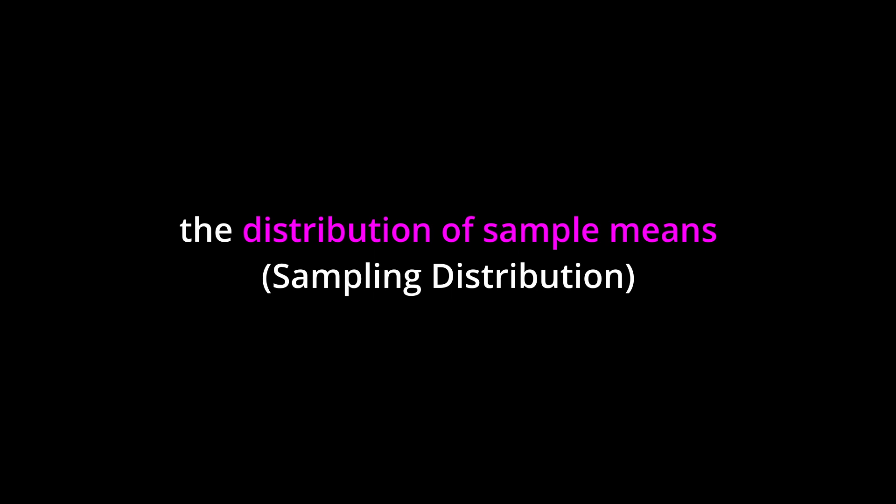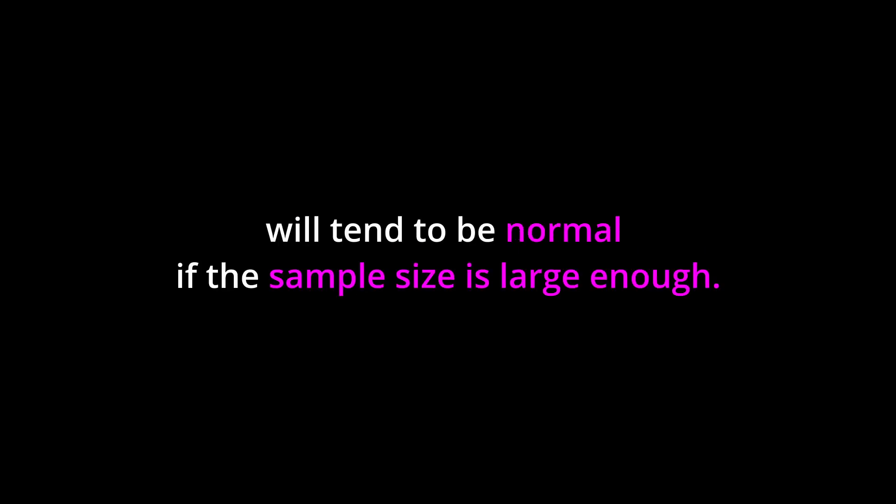Key points. The central limit theorem states that the distribution of sample means will tend to be normal if the sample size is large enough. The size of the sample needed depends on the original population and should be at least 30 or come from a normal distribution. To calculate probabilities for sample means, we can use the normal distribution and the known mean and standard deviation of the original population.